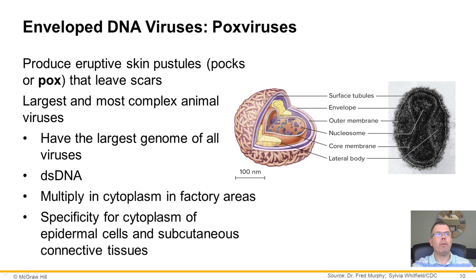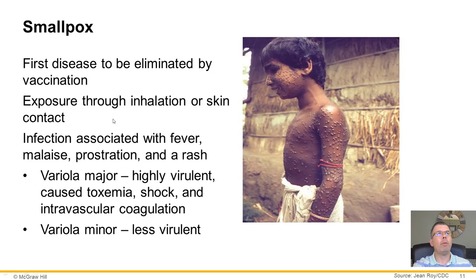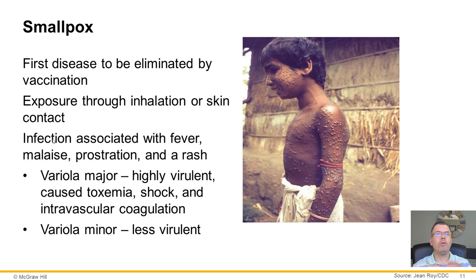Smallpox was the first disease eliminated by vaccination — even in the poorest countries, we've eliminated this through vaccination efforts worldwide. Edward Jenner created the first vaccine using cowpox to vaccinate and prevent smallpox. You get the virus either through inhalation or skin-to-skin contact, leading to flu-like symptoms, prostration, and a rash. There are two types: variola major, which is highly virulent and causes toxemia, shock, and intravascular coagulation; and variola minor, which causes less severe disease.